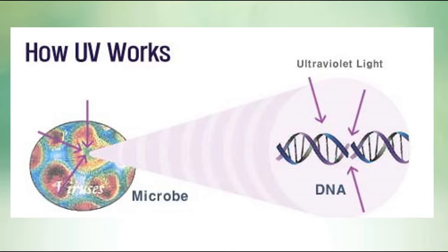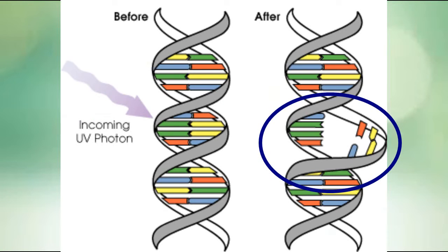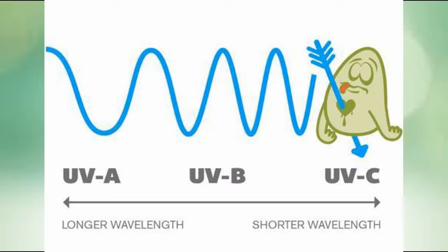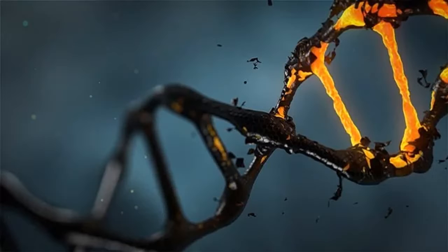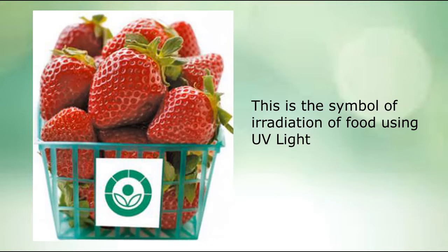Let me tell you how ultraviolet rays affect microorganisms. Generally, ultraviolet rays damage the cellular DNA of infecting microorganisms. The damage caused by ultraviolet rays on the DNA cannot be regenerated, so the surfaces and liquids stay protected for a longer duration.